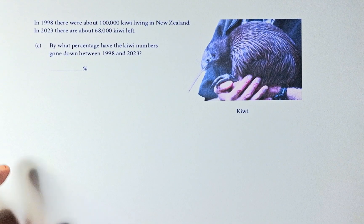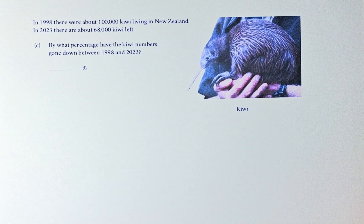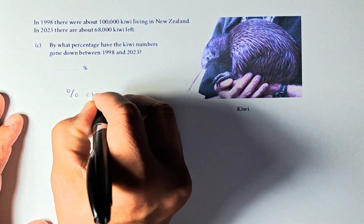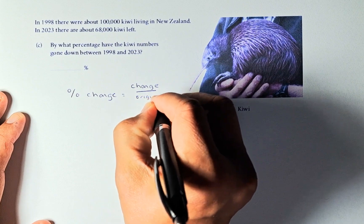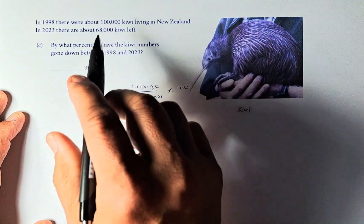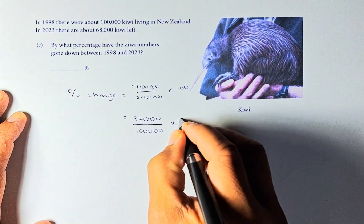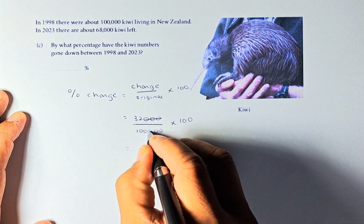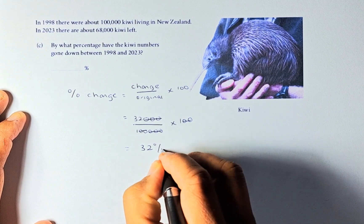Now we shall look at the last question, which is outcome number 2. In 1998, there were 100,000 kiwis living in New Zealand — kiwi birds. In 2023, there are about 68,000 kiwi birds left. By what percentage have the kiwi bird numbers gone down between 1998 and 2023? The formula for percentage change is: change divided by the original, multiplied by 100. The change from 100,000 to 68,000 is down by 32,000. The original amount is 100,000. So 32,000 divided by 100,000 multiplied by 100 gives us 32%.